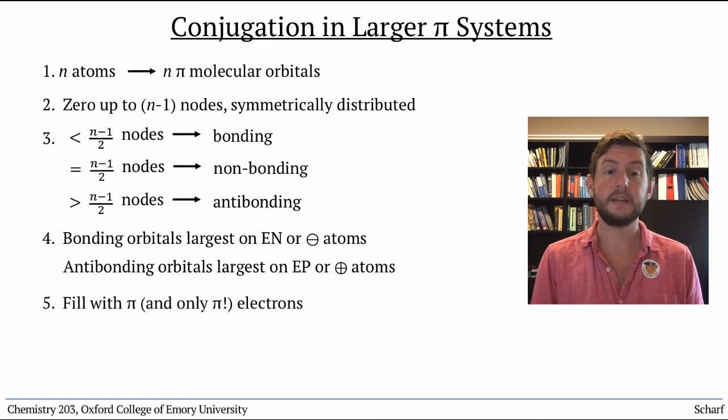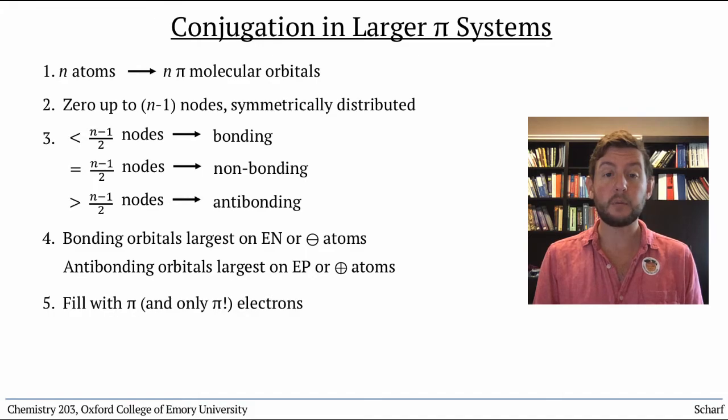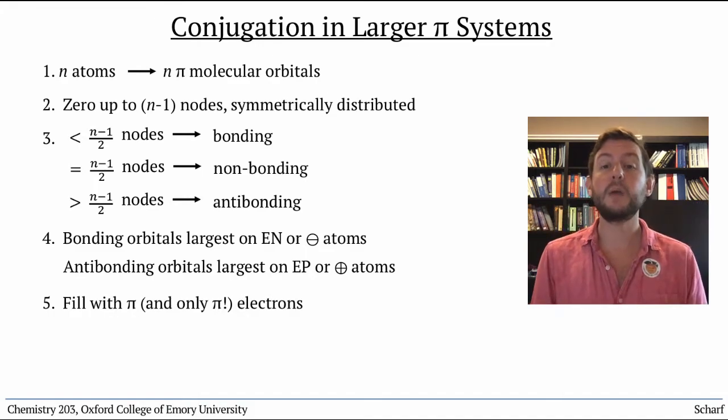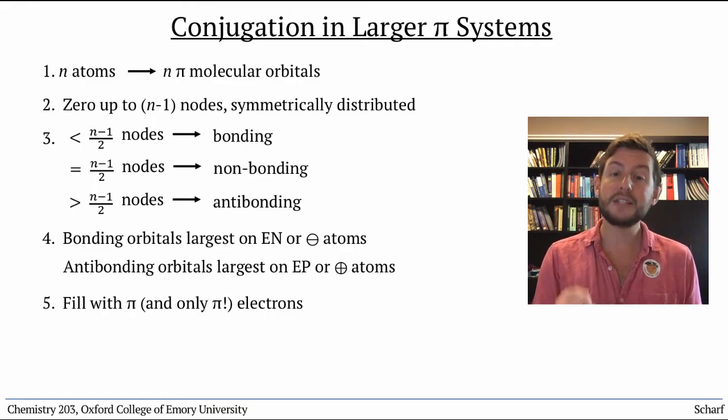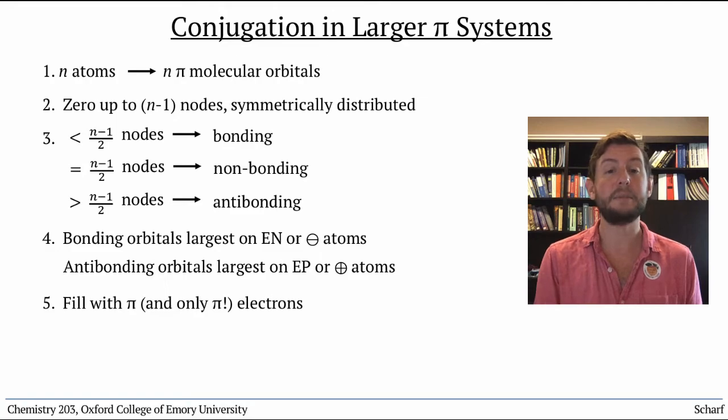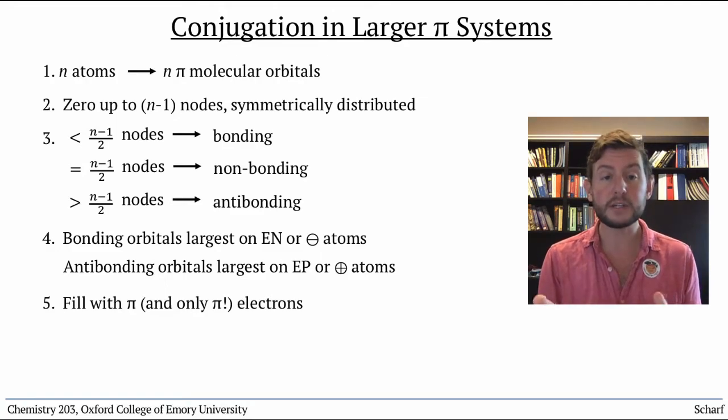Number five, we fill these molecular orbitals from the bottom up. And we only fill them with electrons that are part of the conjugated system. That is, those that are in conjugated pi bonds in some resonance structure.